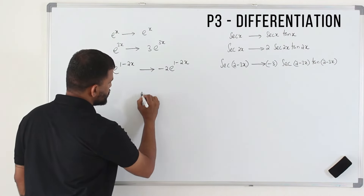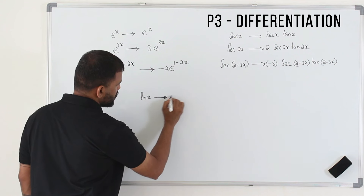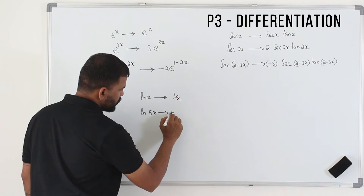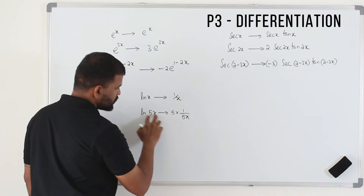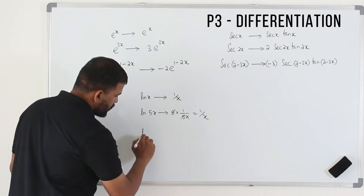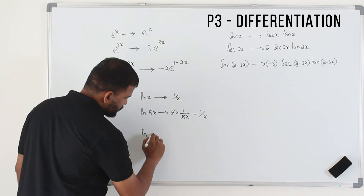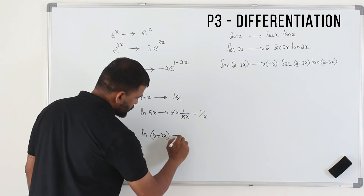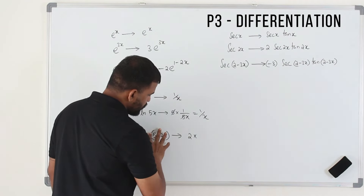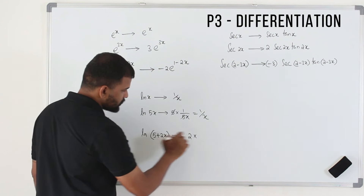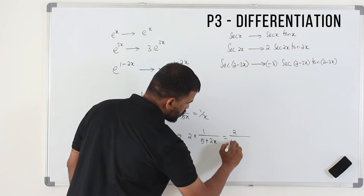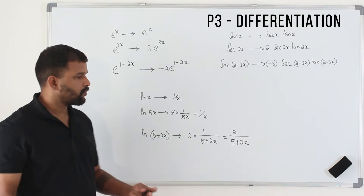For the logarithm: the derivative of ln x is 1 over x. The derivative of ln 5x — put 5 in front times 1 over 5x — you still get 1 over x. What if you have a linear function, ln (5 plus 2x)? The coefficient of x is 2, so put 2 in front, and take 1 over (5 plus 2x). You can write the derivative as 2 over (5 plus 2x). That's how you differentiate a logarithm with a linear argument.